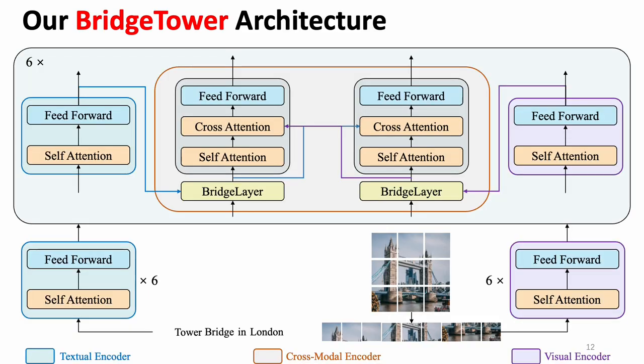Here is the detailed architecture of our proposed Bridge Tower. We adopt RoBERTa-Base and CLIP ViT-Base as unimodal encoders. For the top six layers of unimodal encoders and a six-layer cross-modal encoder, bridge layers can build bridges between encoders at each layer. This enables effective bottom-up cross-modal alignment and fusion between visual and textual representations of different semantic levels of pre-trained unimodal backbones in the cross-modal encoder. It is important to notice that one can apply any visual, textual, or cross-modal encoder in the proposed Bridge Tower architecture.